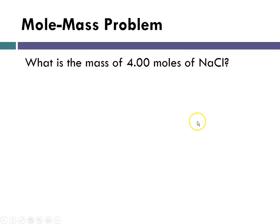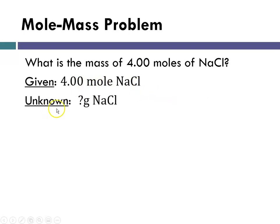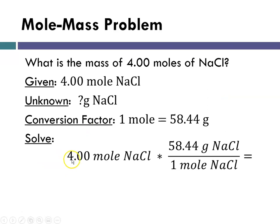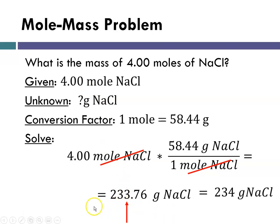So let's look at a mole mass problem. What is the mass of 4.00 moles of sodium chloride? Given 4 moles of sodium chloride, unknown, how many grams of sodium chloride? Conversion factor, 1 mole of sodium chloride is 58.44 grams. We did that a few slides ago. Solve. So we're going to start with our given 4 moles of sodium chloride. This is our molar mass. Remember I said molar mass is going to be like a conversion factor. So we know that we have 58.44 grams of sodium chloride as 1 mole. How do I know what to put in the numerator and the denominator? Well, I want moles of sodium chloride to cancel out. And in order for that to happen, I have to have the moles in the denominator here. And then I'll do my calculation, and that gives me this number. And looking up here, I had three significant figures. So I'm going to round to 234 grams of sodium chloride.